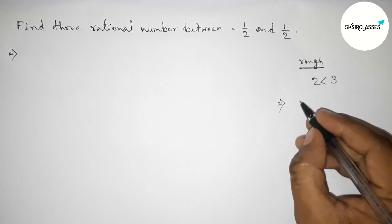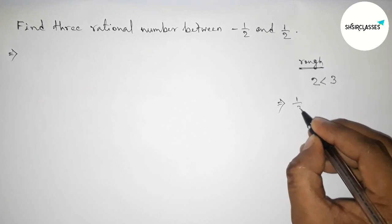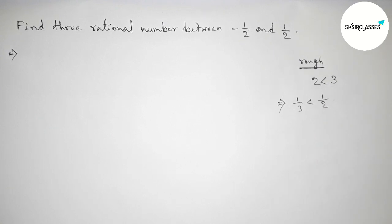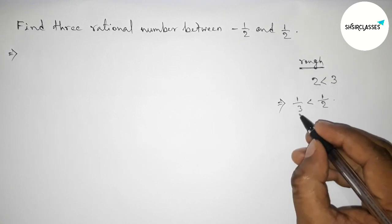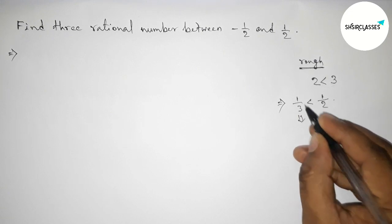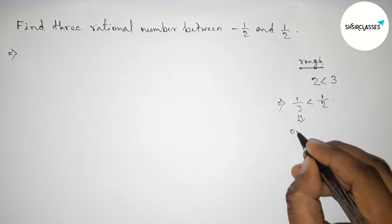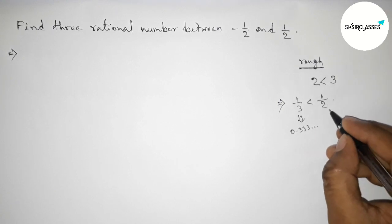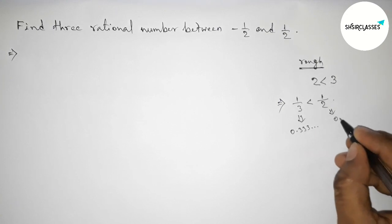So 1/3 less than 1/2, because here the value of 1/3 that is equals to 0.333 and continuous, and the value of 1/2 equals to 0.5. So 0.5 is obviously greater than 0.333 and continuous.